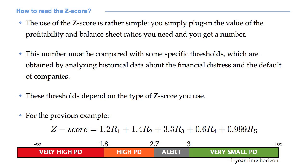These thresholds depend on the type of Z-score you use. For the example we have just considered, the thresholds are as follows. If the Z-score is smaller than 1.8, a company is very likely to default in the near future. If the value is larger than 3, default is extremely unlikely within 1 year and even more. If the Z-score is between 1.8 and 2.7, default is definitely possible. Between 2.7 and 3, some more attention is needed — further analysis may be necessary. This is sometimes called the grey area. The accuracy of the Z-score in this area reaches a minimum. However, on average, Z-scores attain an accuracy of 80–90%.